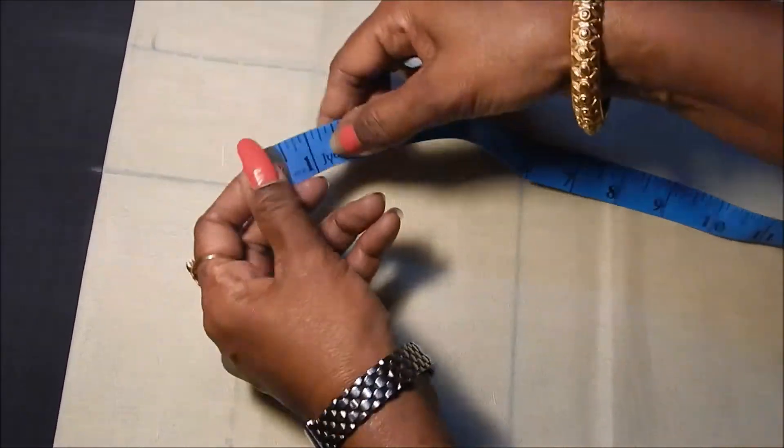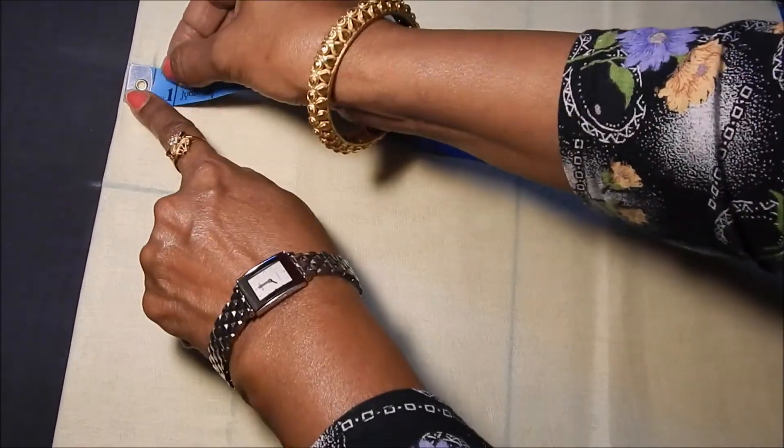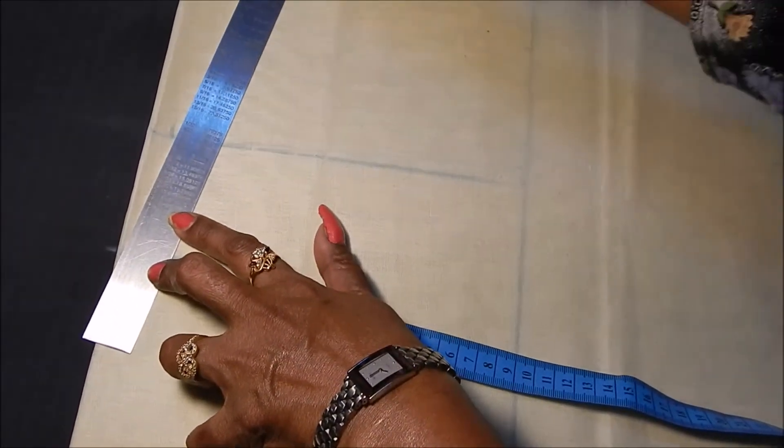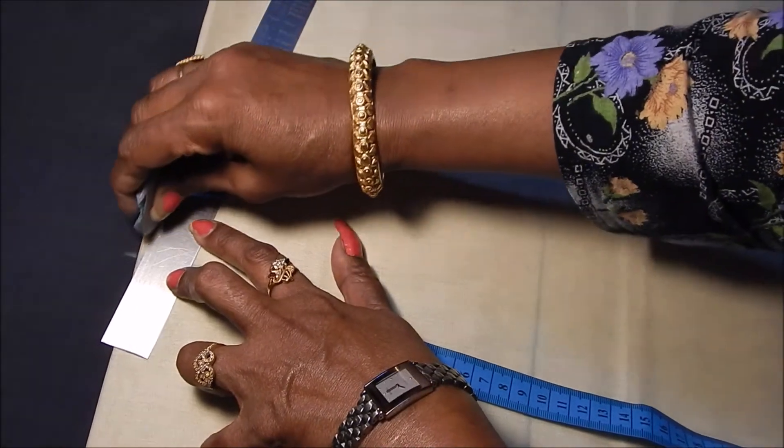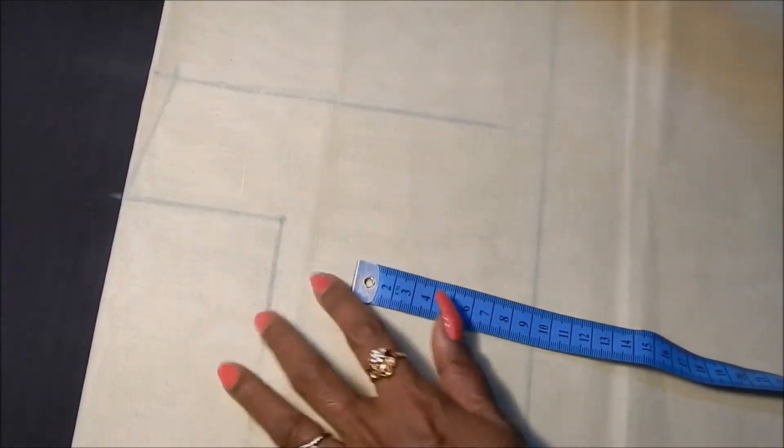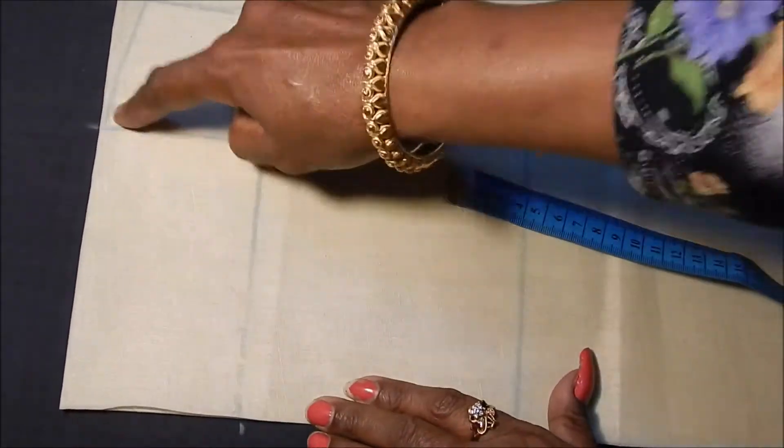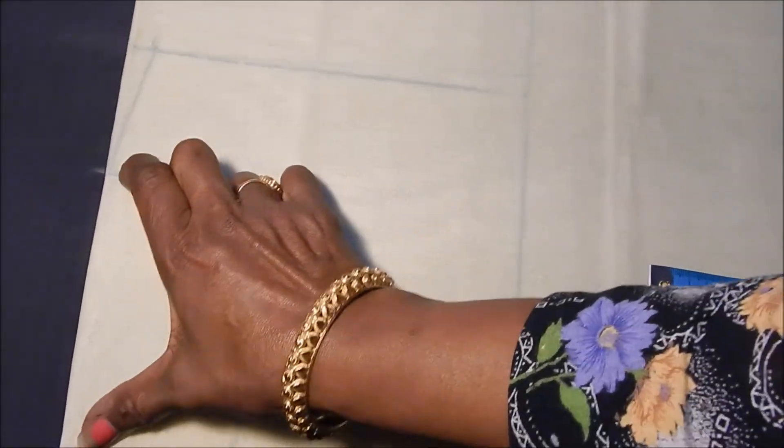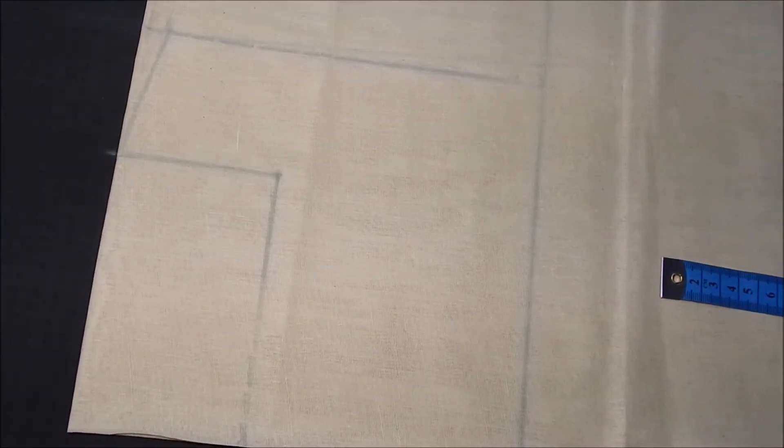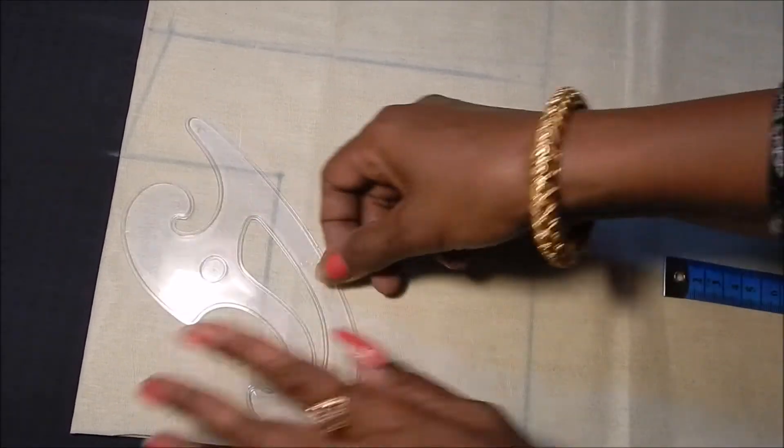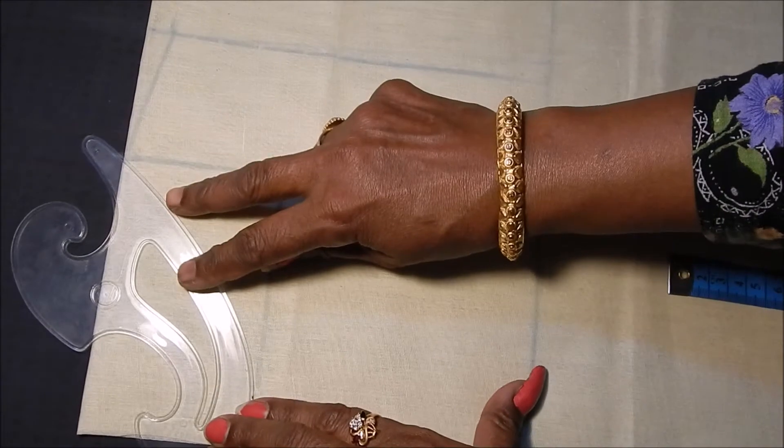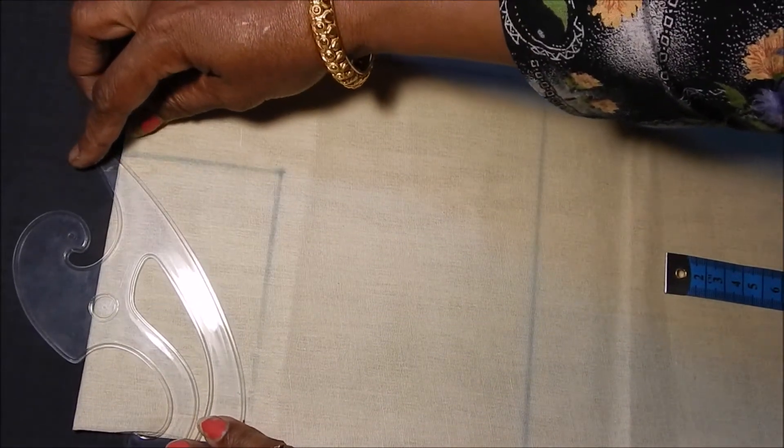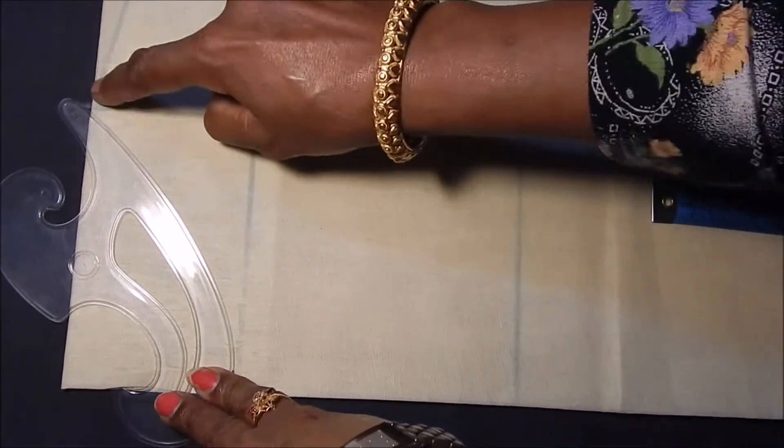For shoulder slope mark half inch and connect slant line from shoulder to the neck. Here we need to draw a boat shape neck. Let's draw a boat neck curve by using French curve.